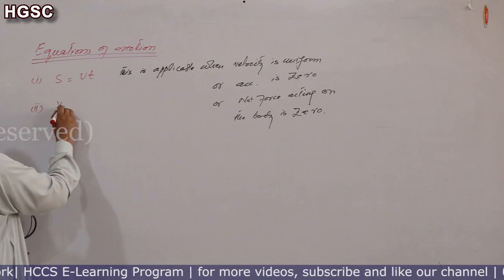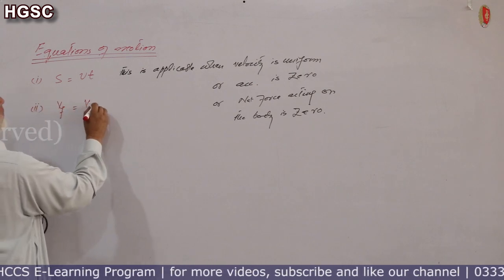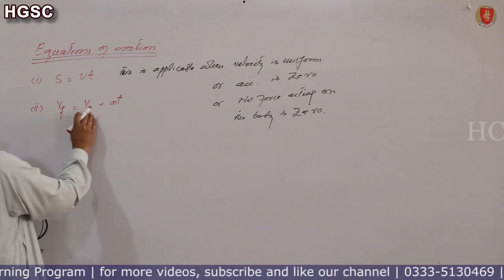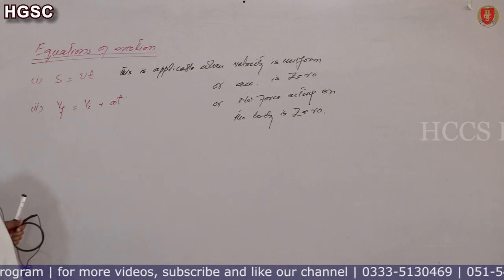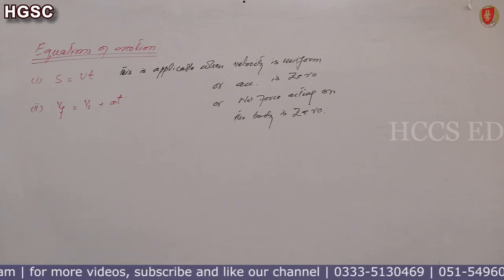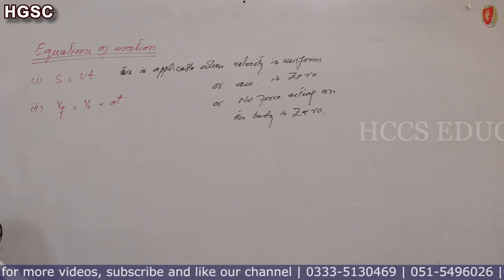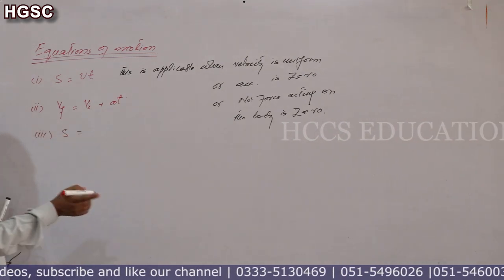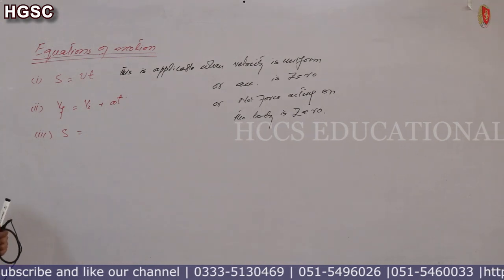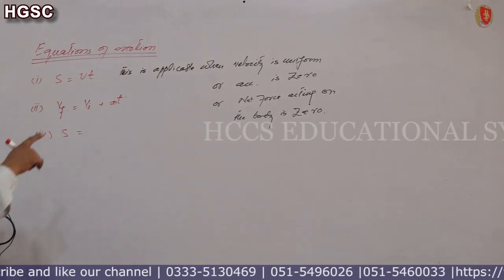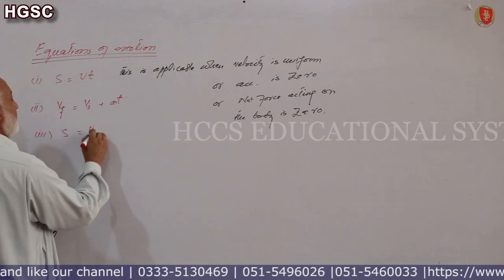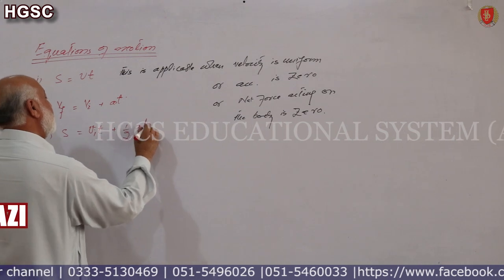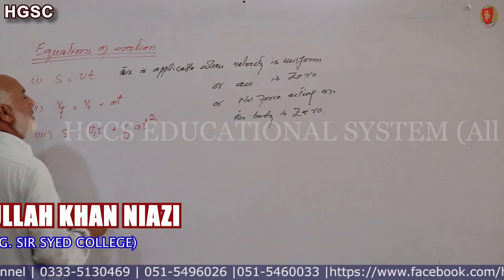Doosri equation hai: vf = vi + at. Agar final velocity nikalni hai to initial velocity kitni hai, acceleration kitna hai, aur kitni der baad uski velocity nikal rahi hai, to time given hoga. Teesri equation: agar distance nikalna hai aur motion accelerated hai, to s = vi·t + ½at² use karte hain.